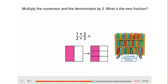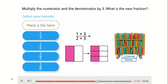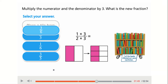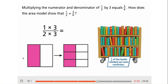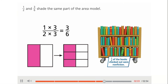Multiply the numerator and the denominator by three. What is the new fraction? There are six total pieces and three shaded pieces. Multiplying the numerator and denominator of one-half by three equals three-sixths. The area model shows that one-half and three-sixths shade the same part of the model, confirming that one-half equals three-sixths.